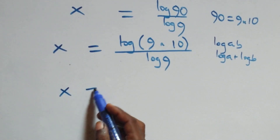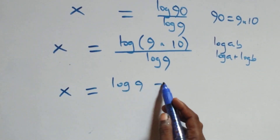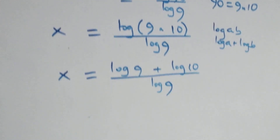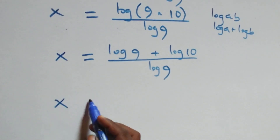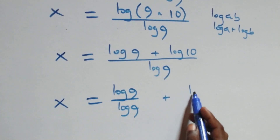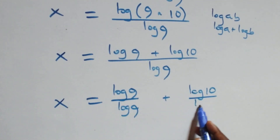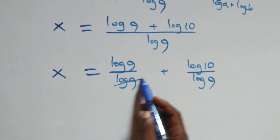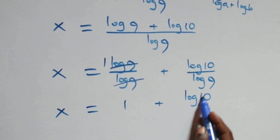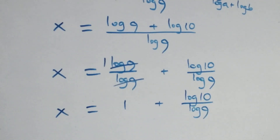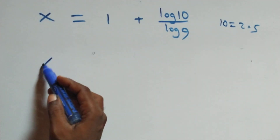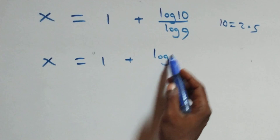From this, we have x equals to log 9 plus log 10 over log 9. We can write x equals to log 9 plus log 10 over log 9.